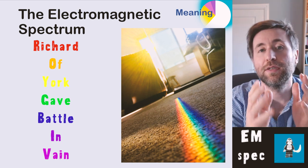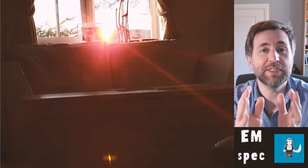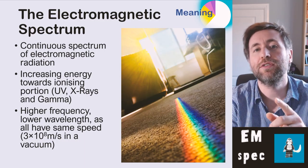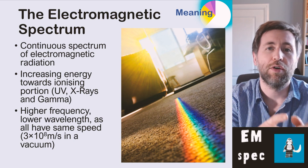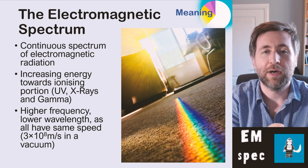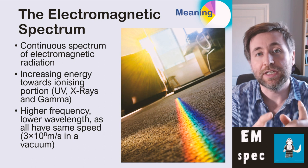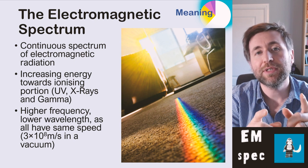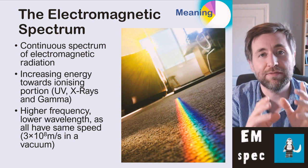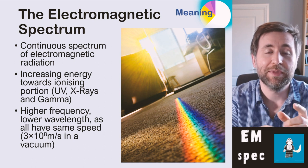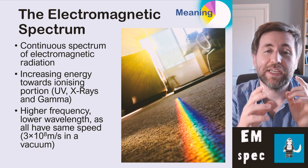That is just the visible part. Now, it was discovered a reasonably long time ago that if you put a thermometer just to the side of the red part of the visible spectrum, that thermometer shows an increase in temperature. And that is because there's another type of wave that is invisible that we can detect with thermometers, and that was infrared.